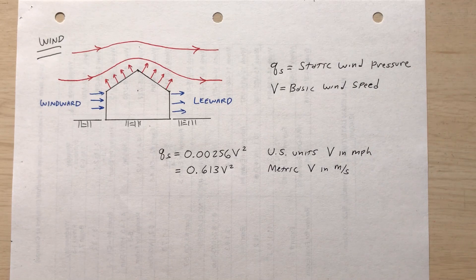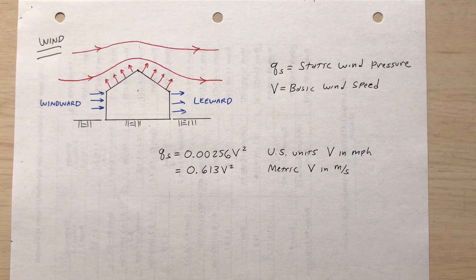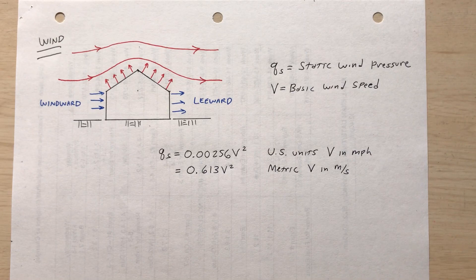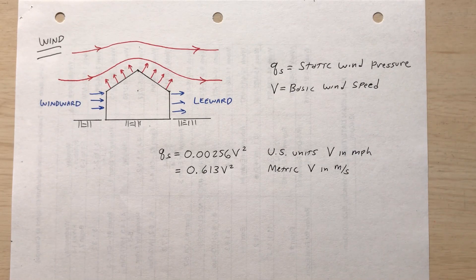It would be 0.613 V squared if we're dealing with a metric system. So the Q sub s, static wind pressure based upon the wind speed. The wind speed depends upon the local geography.